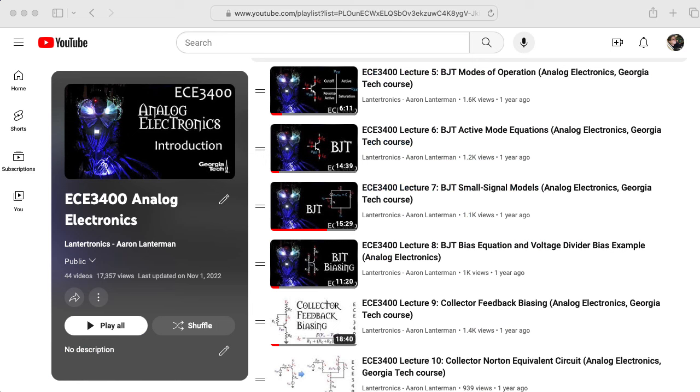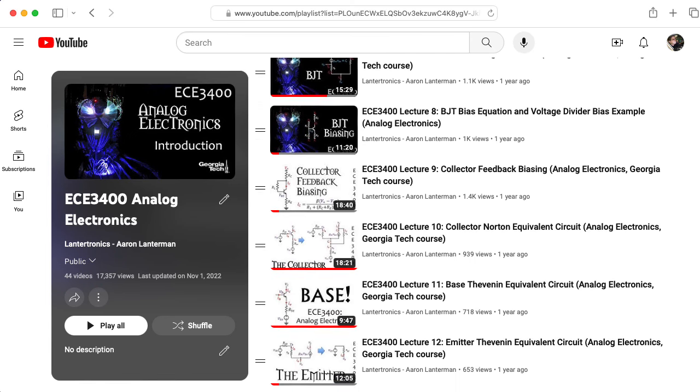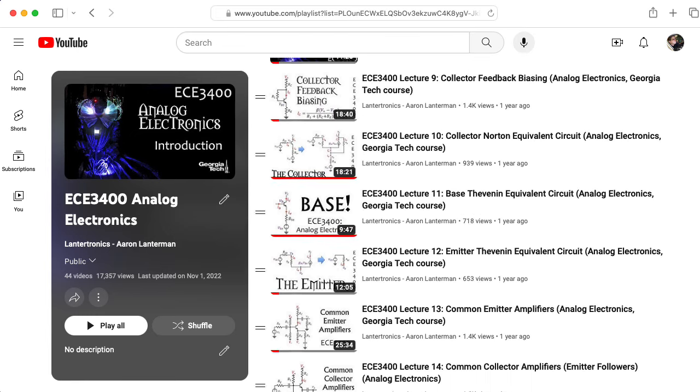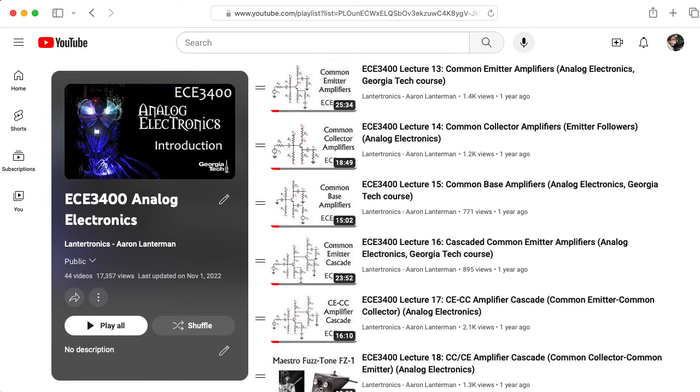Anyway, if you would like to explore these ideas further, I would invite you to check out the lectures in my ECE 3400 playlist. 3400 is the new number of what was called 3050 when Marshall was teaching. And I teach this material using his techniques. So I start with BJTs on Lecture 5, and then we derive the small signal models and the various Thevenin and Norton equivalents, and then build up the formulas for the various standard amplifiers and go from there.